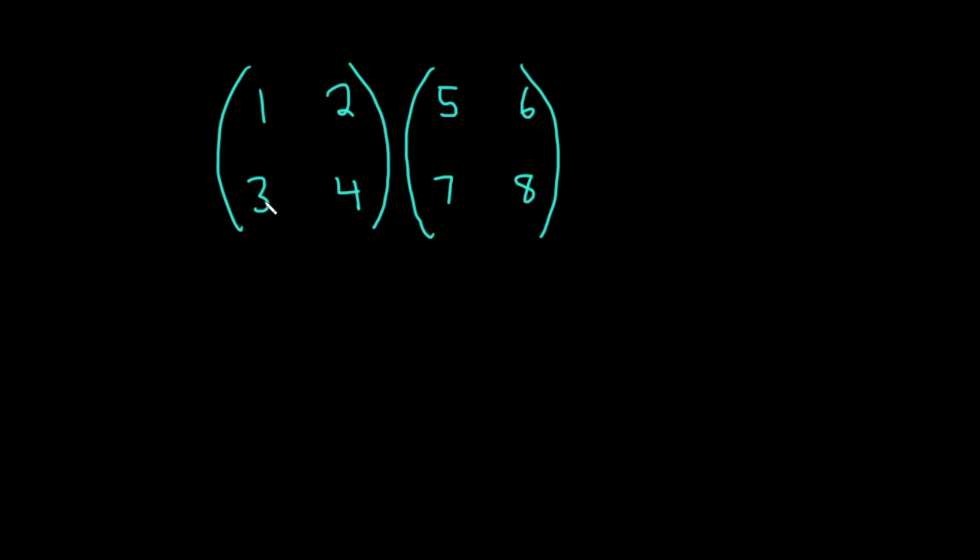So this matrix here is a square matrix because it has two rows and two columns. It's a two by two matrix. This one's also a two by two matrix because it has two rows and two columns.